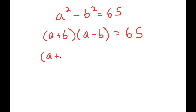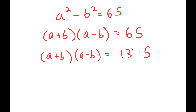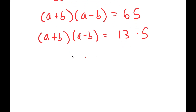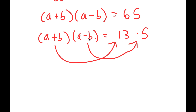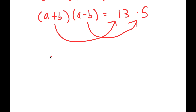I can rewrite this as a plus b times a minus b is equal to 13 times 5. Now I can set a plus b equal to 13 and a minus b equal to 5, because this is in the form of a number times another number equal to a number times another number. So a plus b equals 13, and a minus b equals 5.